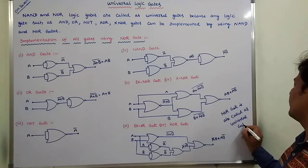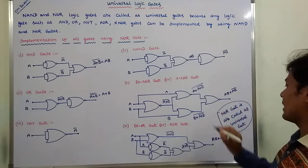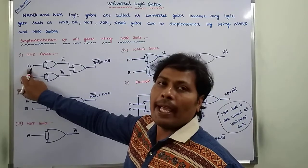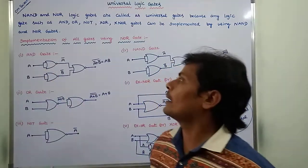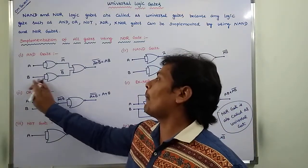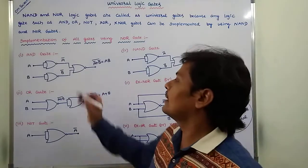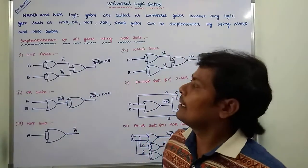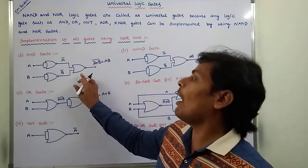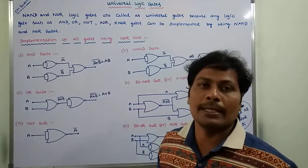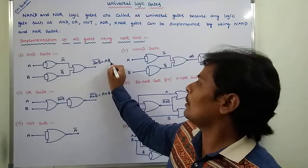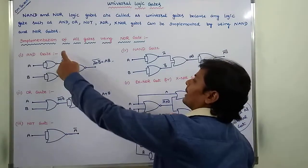How we are implementing all gates by using NOR gate? First one is AND gate. Input A is applied to the NOR gate, so then we are getting the output A bar. Input B is applied to the separate NOR gate, then we are getting the output B bar. So this A bar output and B bar output can be sent to another NOR gate as inputs, then we are getting the output A bar plus B bar whole bar, that is equal to AB. This is the output of AND gate.